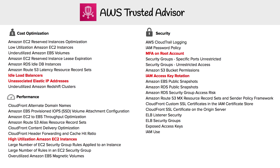Looking at performance, let's say we look at high utilization Amazon EC2 instances. If you have very high CPU usage on an EC2 instance, it's going to say, hey, maybe you should use a larger instance to get better performance out of this machine.